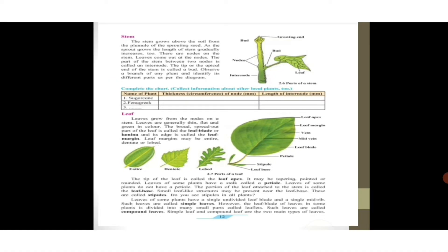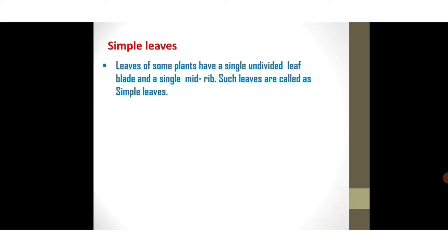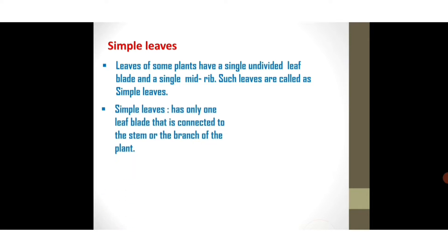Please watch the full video to understand this concept. The definition of simple leaves: leaves of some plants have a single undivided leaf blade and a single midrib — such leaves are called simple leaves. Simple leaves have only one leaf blade, or lamina, that is connected to the stem or branch of the plant.